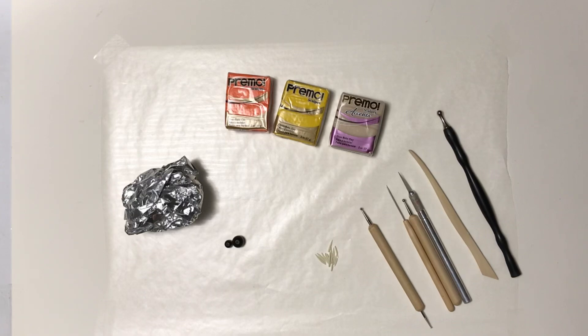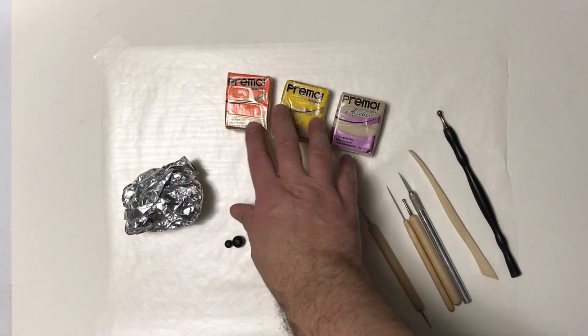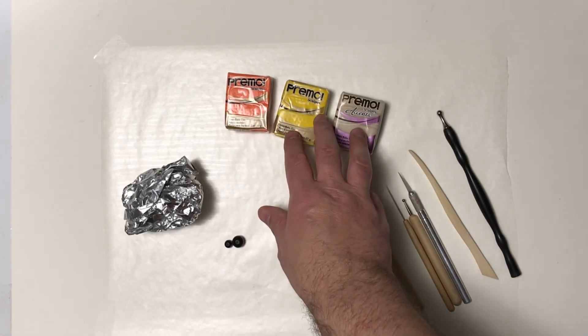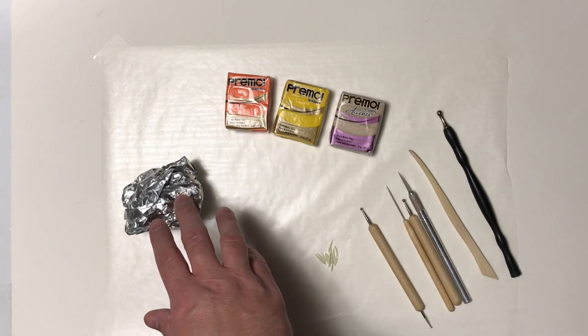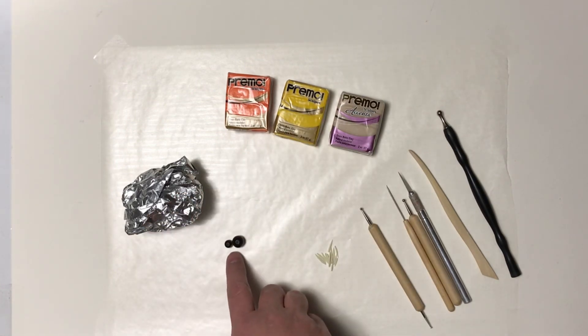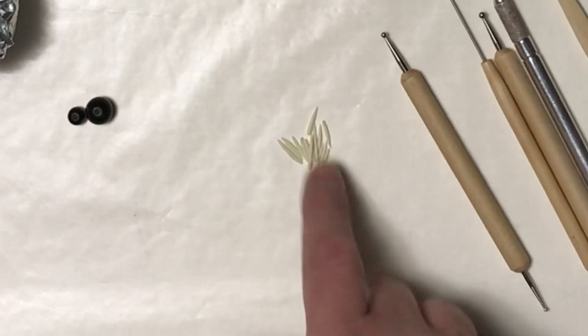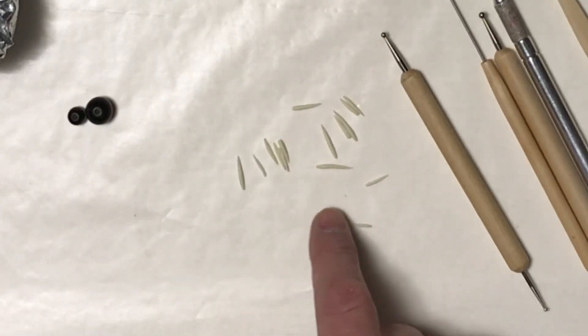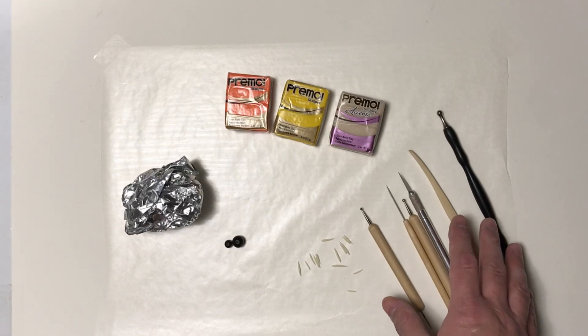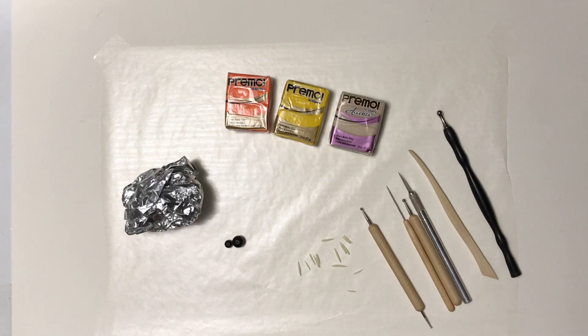I went ahead and got my supplies ready. I have three different colors of Primosculpe: orange, yellow, and translucent. I have my foil that I'm going to use for my base, a couple beads for his eyes, and some pre-sculpted teeth. Now these I made back for my carrot monster, so I did bake them so I can place them without distorting the shape. And then I have my tools for the candy corn monster.